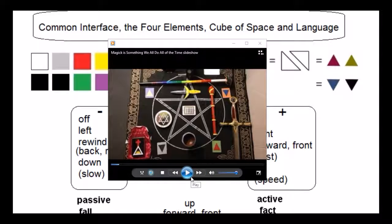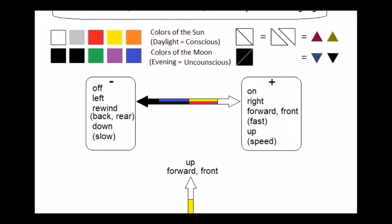Another interface may provide you with a way to shut something off. Generally, left is off and right is on. We can also see that left corresponds to rewind, which is back or rear, and to the right is forward or fast forward.